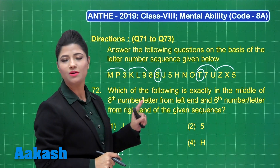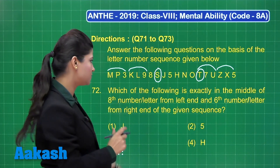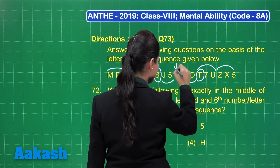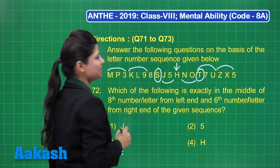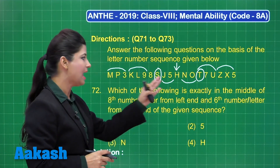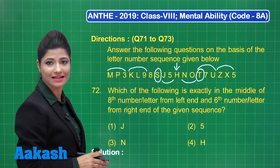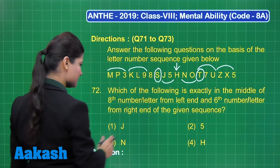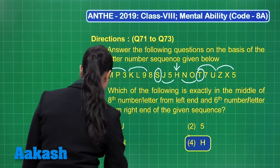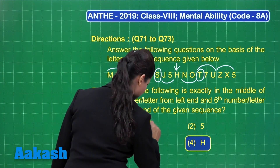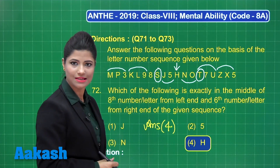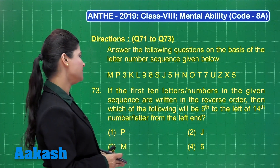Now we need to obtain the number or letter lying exactly in the middle of these two positions. If you observe, in the middle of these two lies the letter H. So H is the required letter lying in the middle of the eighth number from the left end and the sixth number from the right end. The correct answer is option number four, that is H.